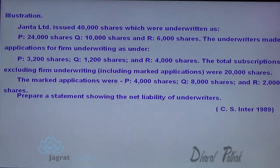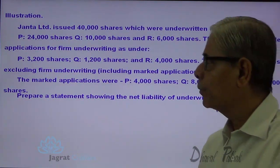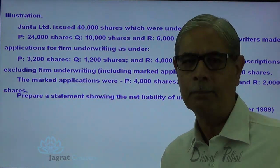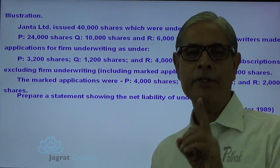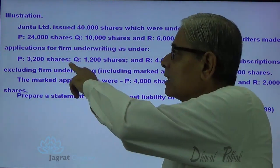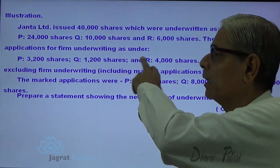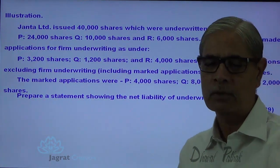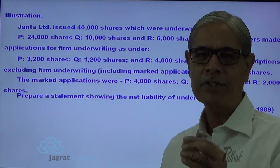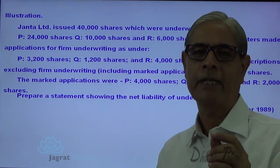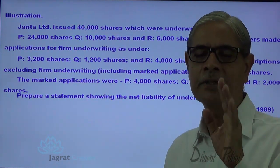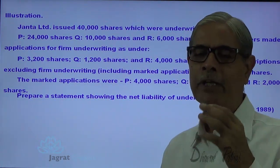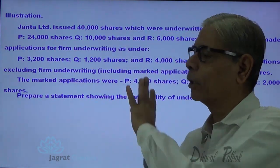The underwriters made an application for firm underwriting as under. P committed to purchase 3,200 shares firm — even if the issue is oversubscribed, P is going to purchase this many shares. Similarly, Q has committed to purchase 1,200 shares and R has committed to purchase 4,000 shares. They are known as firm shares. These shares are going to be allotted to these underwriters whether the issue is fully subscribed, oversubscribed, or even undersubscribed — in all cases, they are entitled to have these shares.